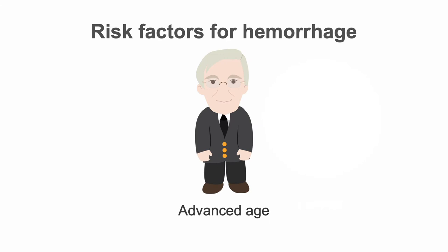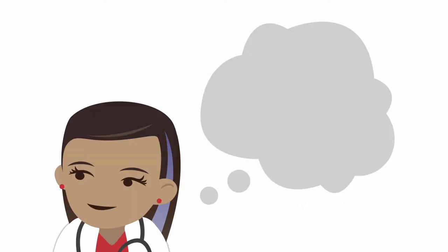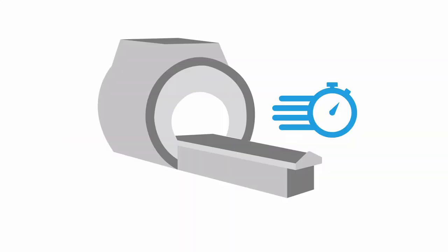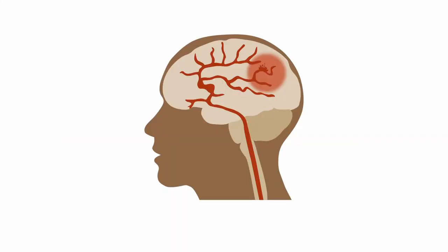Furthermore, risk factors that predispose a patient to ischemic stroke also predispose them to hemorrhagic stroke. When evaluating the patient, be on the lookout for signs of increased intracranial pressure and potential brain herniation. Initiate ICP control interventions if concerned. Move to imaging as quickly as possible, because hemorrhagic strokes have a tendency to progress — it's best to know what you're dealing with as early as possible.